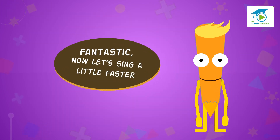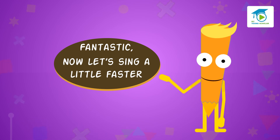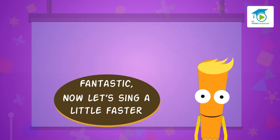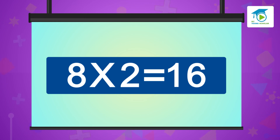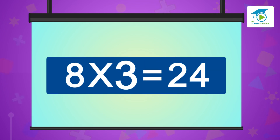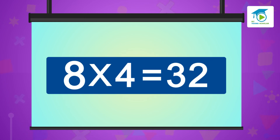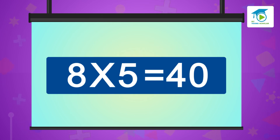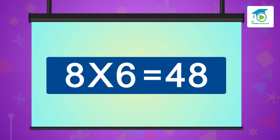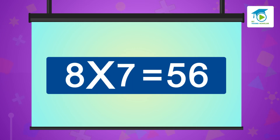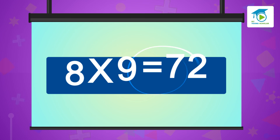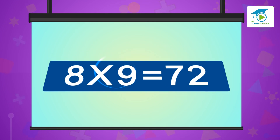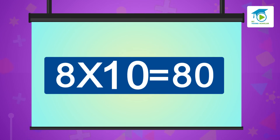Fantastic! Now let's sing a little faster. Eight ones are eight, eight twos are 16, eight threes are 24, eight fours are 32, eight fives are 40, eight sixes are 48, eight sevens are 56, eight eights are 64, eight nines are 72, eight tens are 80.